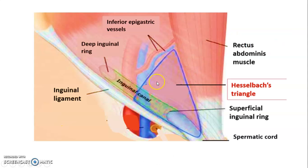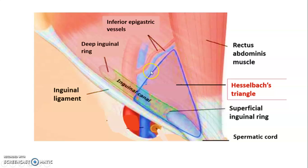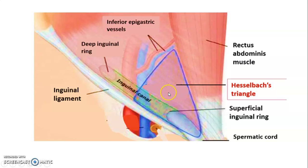Hesselbach's triangle is formed between the lateral border of the rectus abdominis, the inferior epigastric vessels laterally, and the inguinal ligament inferiorly. This is what we are going to use to differentiate between direct inguinal hernia and indirect inguinal hernia.